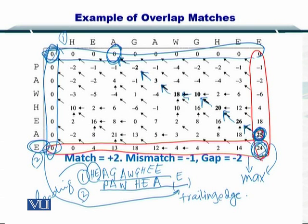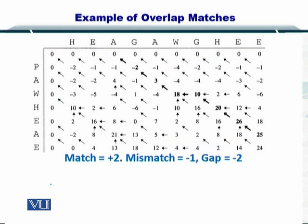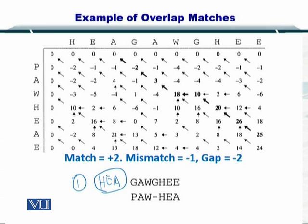In this way, you have aligned the two sequences using the Needleman-Wunsch algorithm, but with a different traceback strategy. These two sequences have been aligned, and as you will notice, this is the leading edge in sequence number one and this is the trailing edge in sequence number two.